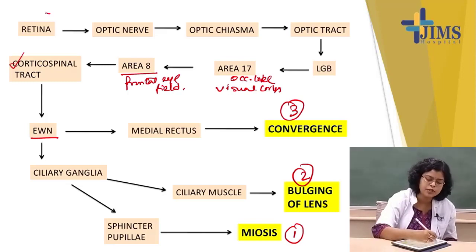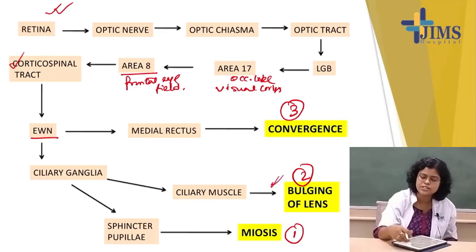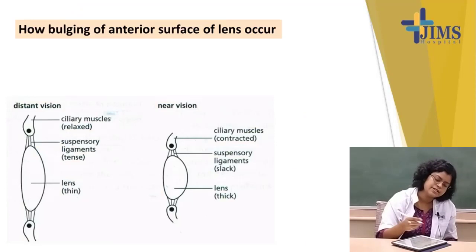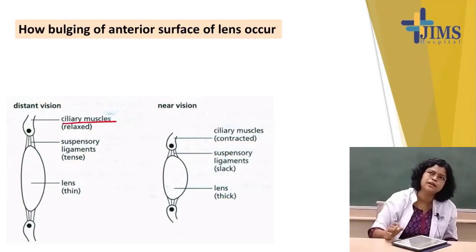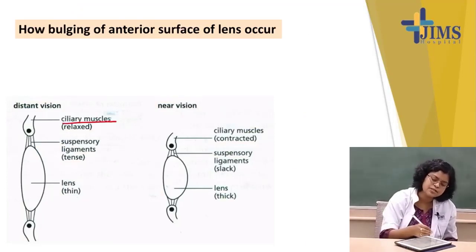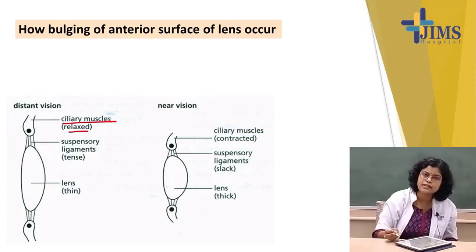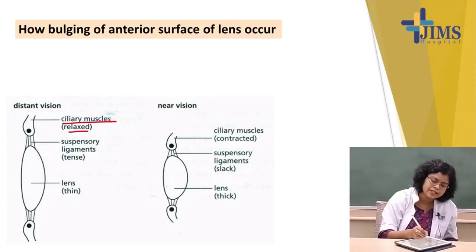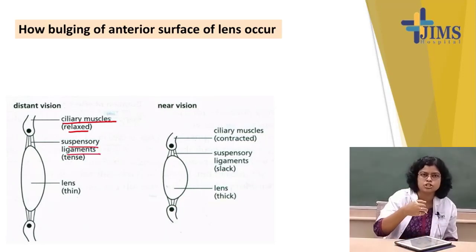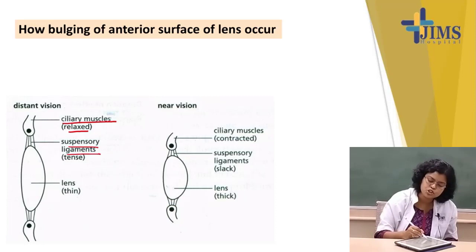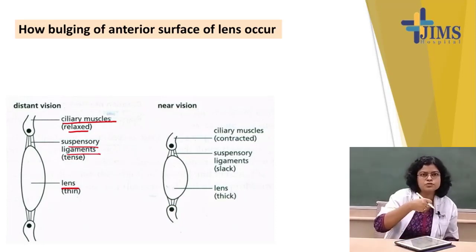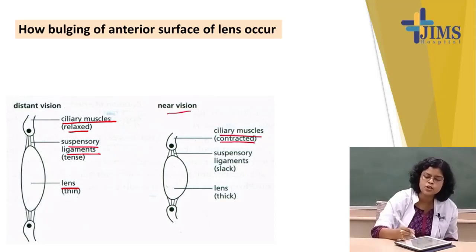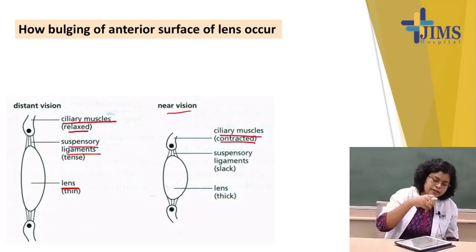Now, how does bulging of the lens occur? When there is no accommodation, the ciliary muscle remains relaxed. When the ciliary muscle is relaxed, the suspensory ligaments become taut, and when the suspensory ligaments are taut, the lens is also stretched.